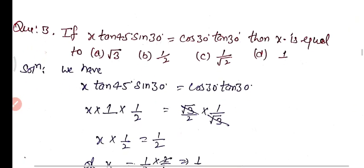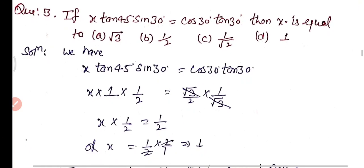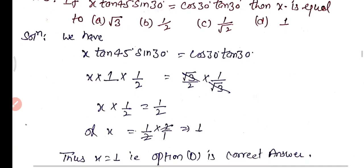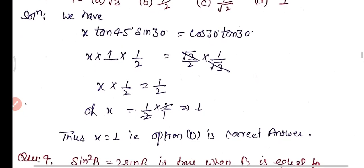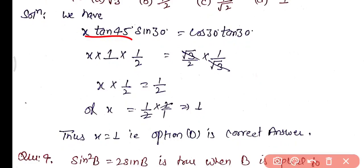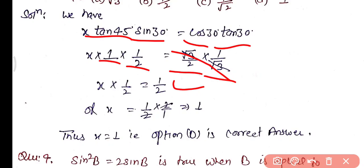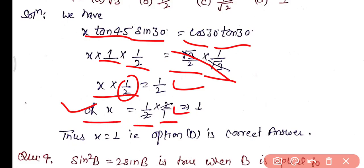Question 3: If x × tan 45° × sin 30° = cos 30° × tan 30°, then the value of x is — options: √3, 1/2, 1/√2, or 1. Substituting: tan 45° = 1, sin 30° = 1/2, cos 30° = √3/2, tan 30° = 1/√3. The √3 terms cancel on the right giving 1/2, and left side is x × 1/2. Transposing: x = 1. Option D is correct.